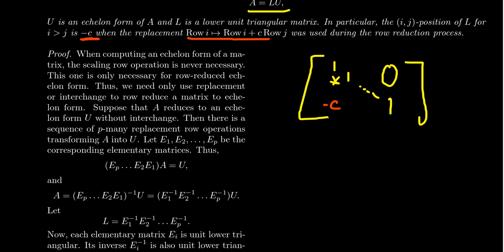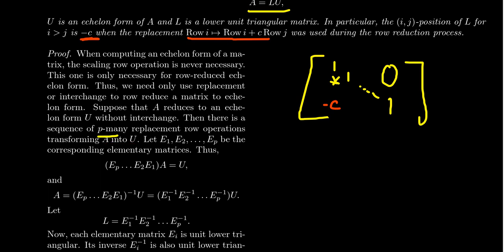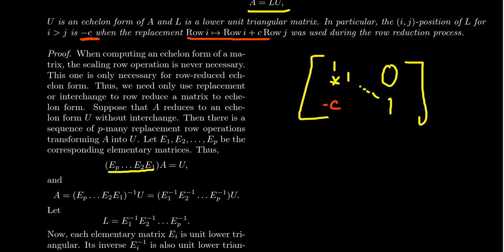Suppose that A reduces to an echelon form U without any interchange whatsoever. Then there's going to be some sequence of elementary replacement row operations that transforms A into U. Say there are P many of those — each one corresponds to an elementary matrix E1, E2, up to EP. Eventually we have EP times EP-1 all the way down to E1 times A equals U. If we multiply by the inverse matrix on the left, we can move the product of elementary matrices to the right-hand side, giving A equals the inverse of that product times U.